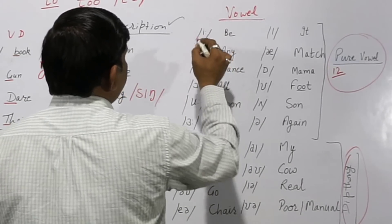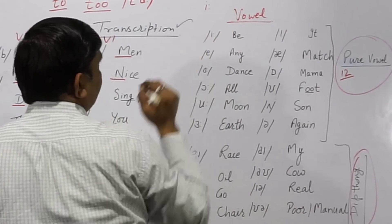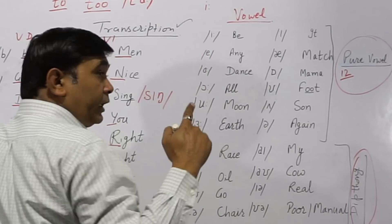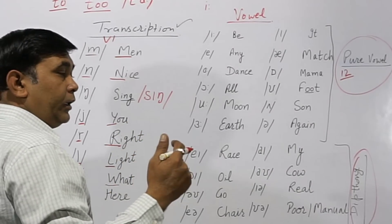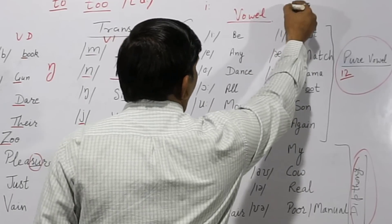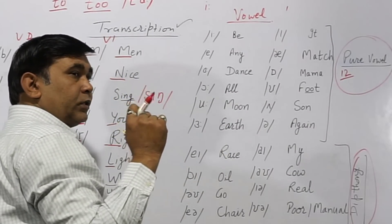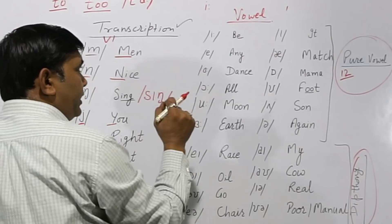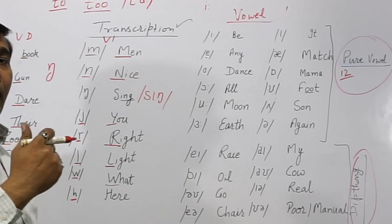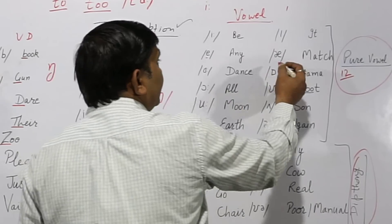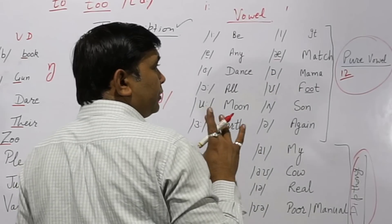The first vowel is like small i with two dots — this is the long /iː/ sound, as in 'bee'. Next is small i — the short /ɪ/ sound — as in 'it', 'kit', 'hit'. Then /e/ — as in 'any', 'many', 'men'. And /æ/ — as in 'match', 'catch'.